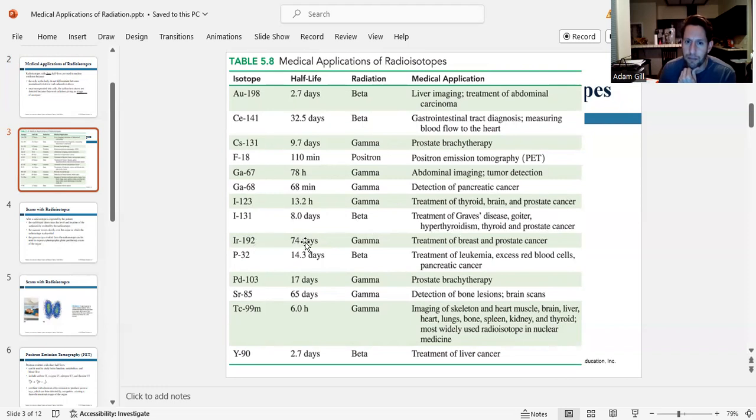Iridium-192, half-life of 74 days. It's a gamma emitter. We use it to treat breast and prostate cancer. Phosphorus-32 has a half-life of 14.3 days, beta emitter. We use it to treat leukemia, excess red blood cells, pancreatic cancer.